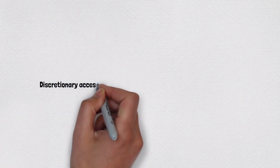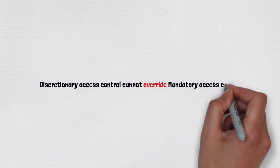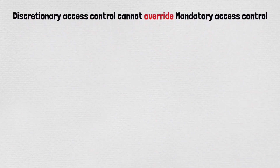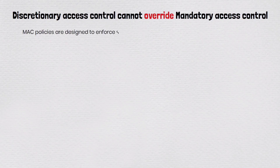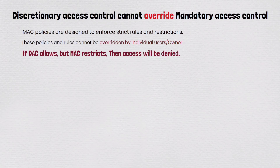Coming back to our earlier question: discretionary access control cannot override mandatory access control. Mandatory access control policies are designed to enforce strict rules and regulations that cannot be overwritten by individual users. Even if a user has permissions to access a resource according to discretionary access control, if the mandatory access control policies do not allow it, the access will be denied.